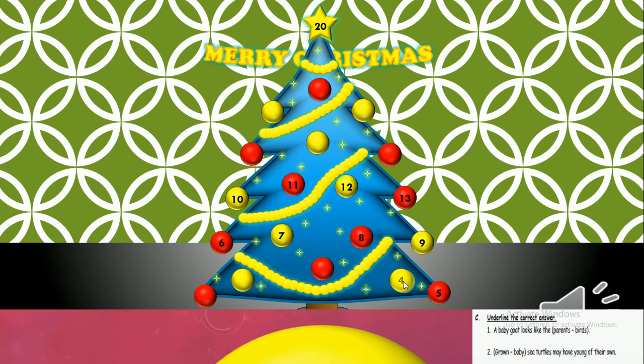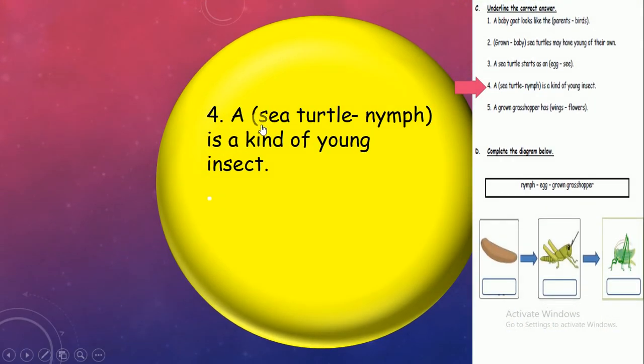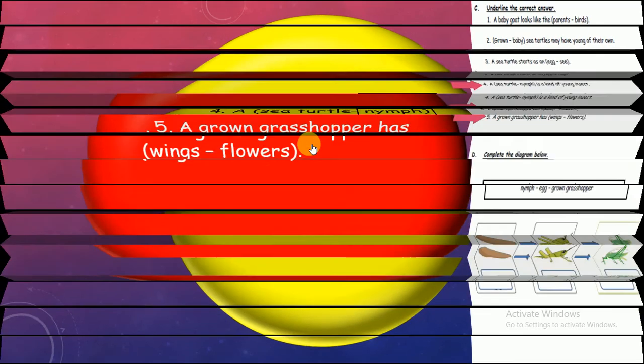Number 4: A sea turtle or nymph is a kind of young insect. Kind of young insect? So what's sea turtle? Insect? No, sea turtles are reptiles. So it's nymph. Nymph is young insect.